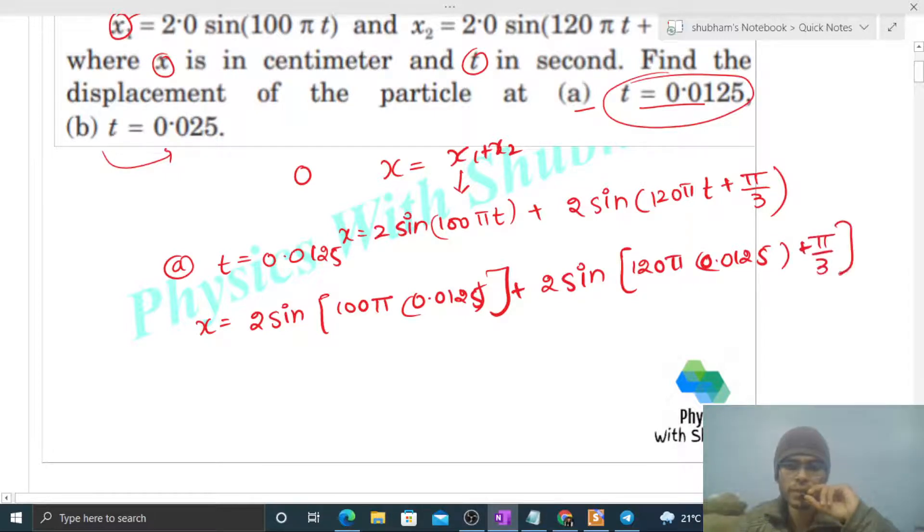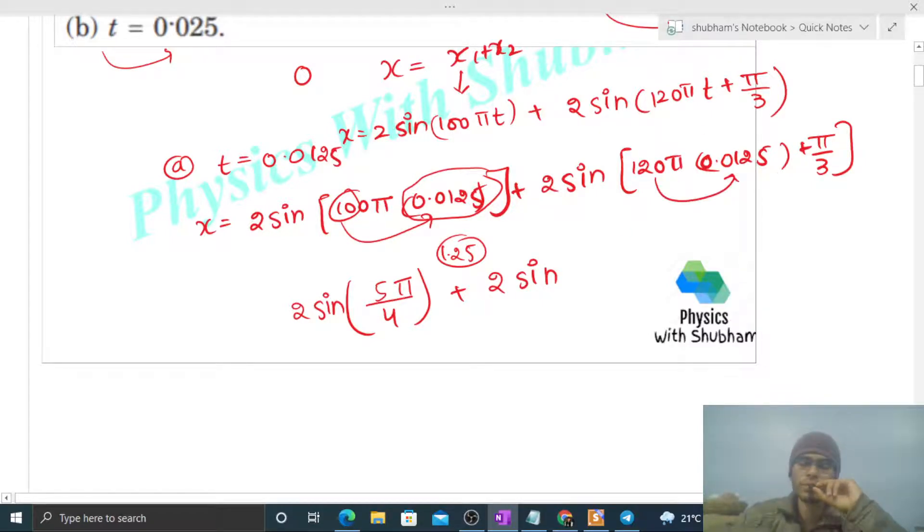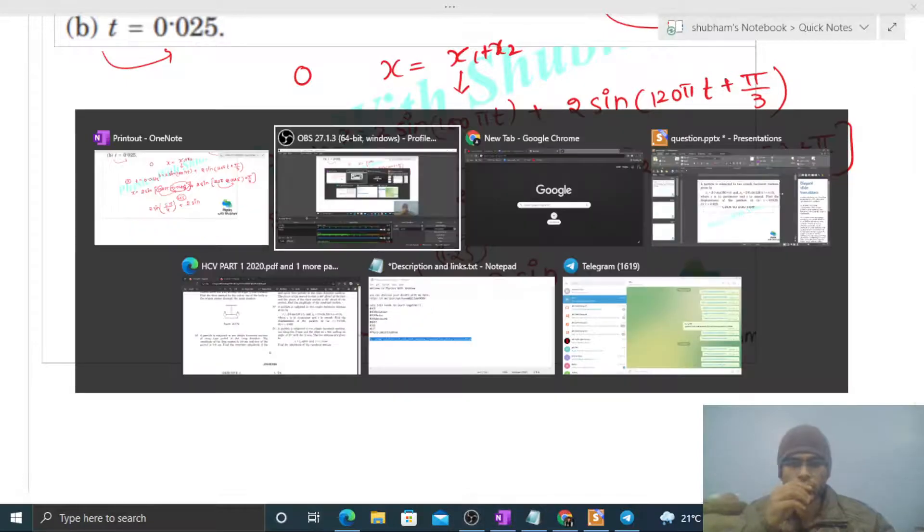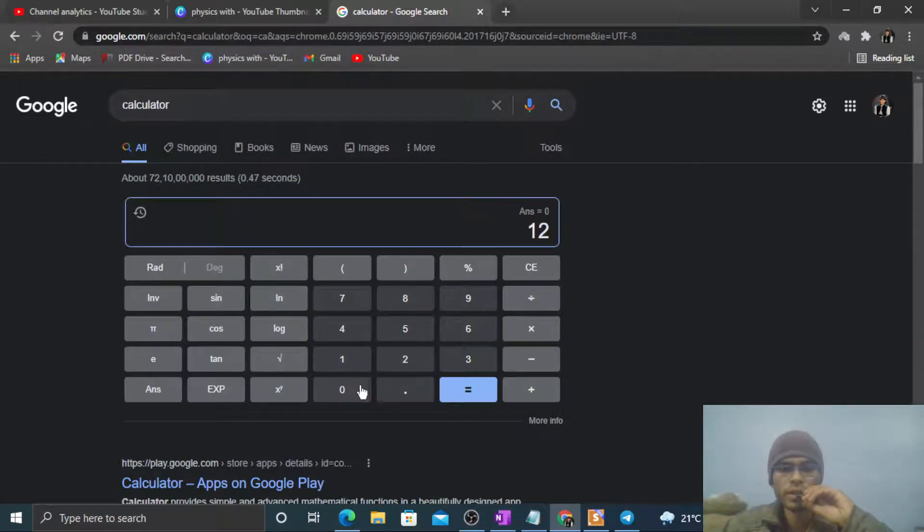Here we have to look at this one. It will be 1.25 and 1.25 is nothing but 5 by 4. So 2 sin 5 pi by 4 plus 2 sin 120 into 0.0125. Let me use calculator. 120 into 0.0125, how much is this?